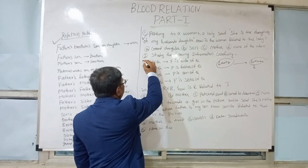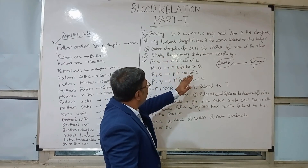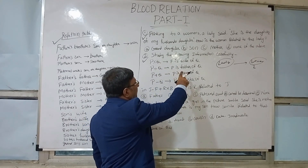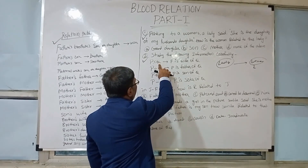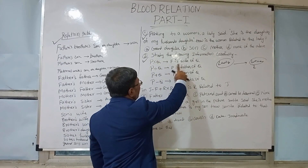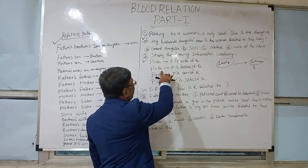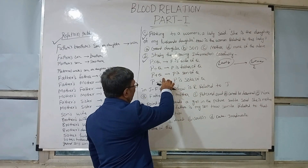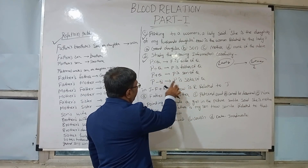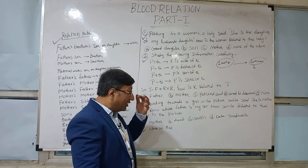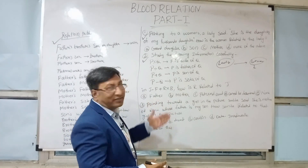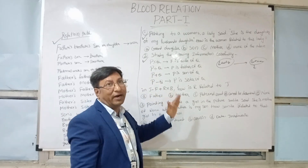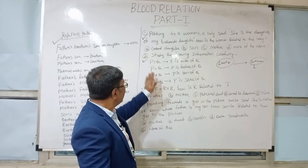Now the next question: study the following information. Here the information is: P × Q means P is the wife of Q. P ÷ Q means P is the father of Q. P + Q means P is the son of Q. P − Q means P is the sister of Q. For this type of question, in every question there is a different sign, so every particular sign is only for this particular question, not for all questions.